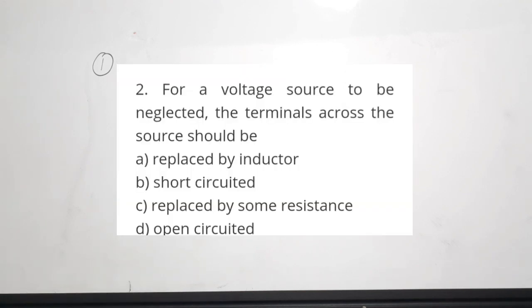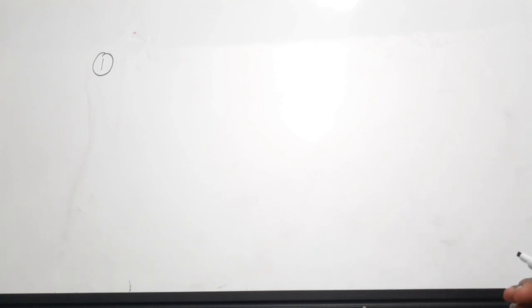Let's see the solutions of the 10 questions which you have already answered. The first question: for a voltage source to be neglected, the terminals across the source should be — what? We do the neglecting of voltage sources and current sources while doing the superposition theorem and other theorems in network analysis, and in those conditions we have to assume either open circuit or short circuit.